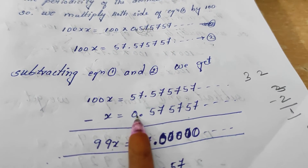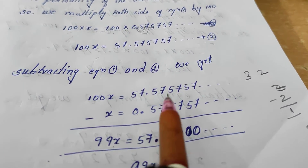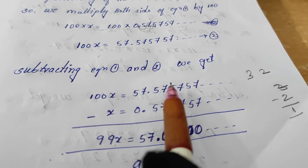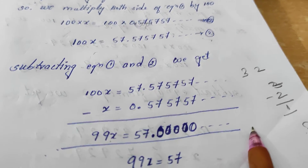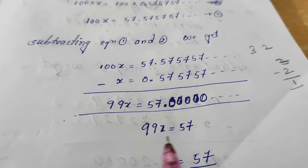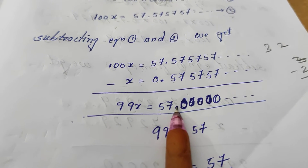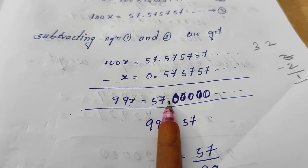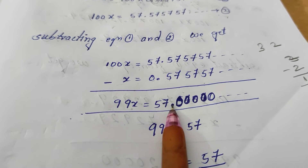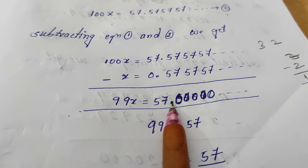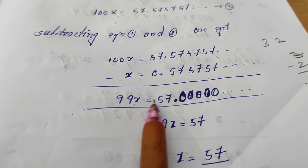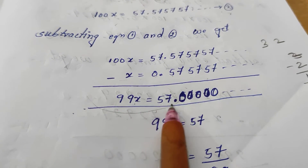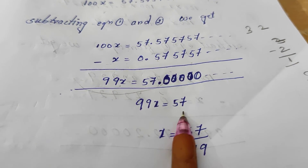57 minus 0 is 57. After the decimal: 57 minus 57 gives 0. The zeros after the decimal we are not considering — we neglect those zeros. So we have 99x equals 57.